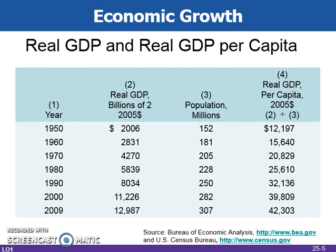This table presents the growth in real GDP and real GDP per capita in the United States since 1950. Due to the population increase, real GDP per capita has increased at a slower pace than real GDP. Since the population has doubled, the rate of increase in real GDP per capita has been about half that of real GDP.